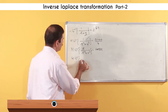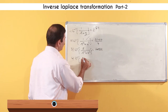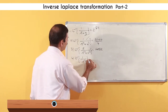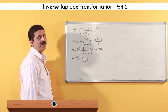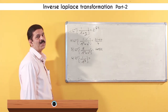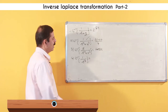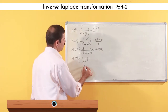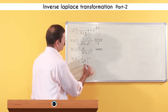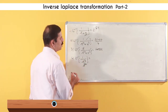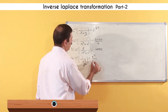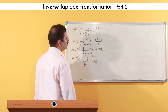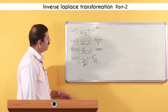One more example: suppose it is given as 1/s³. The corresponding formula comes from the direct Laplace of t^n. Here s is raised to the power 2+1, so n is equal to 2, giving t^n / n! which is t² / 2 factorial.